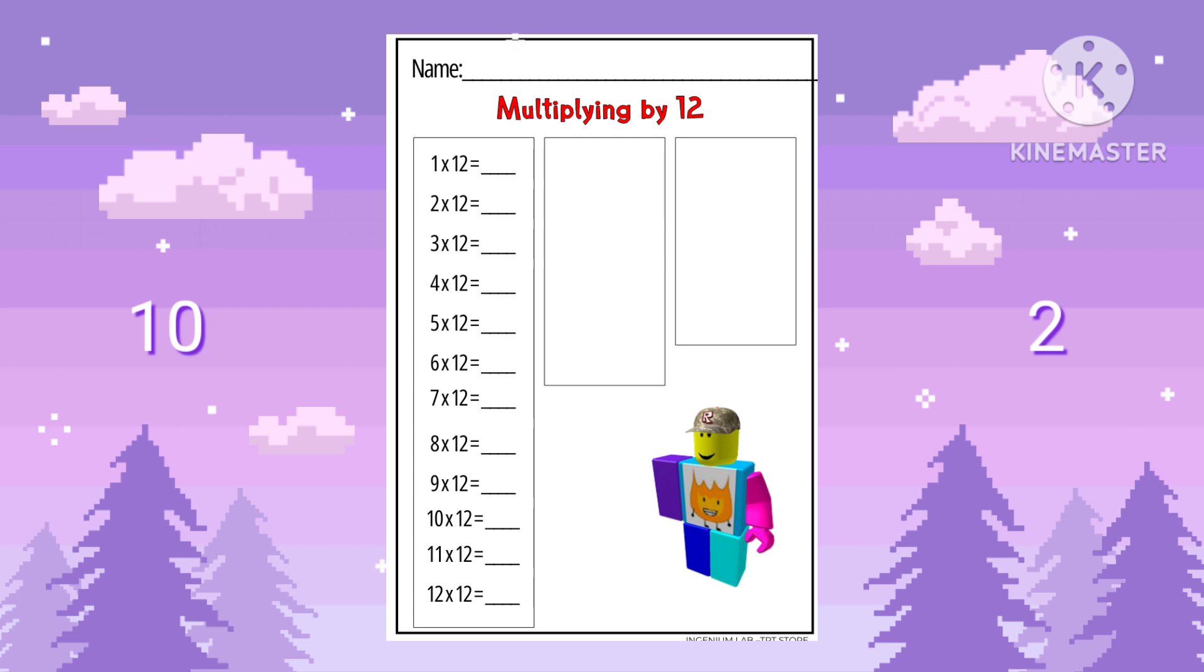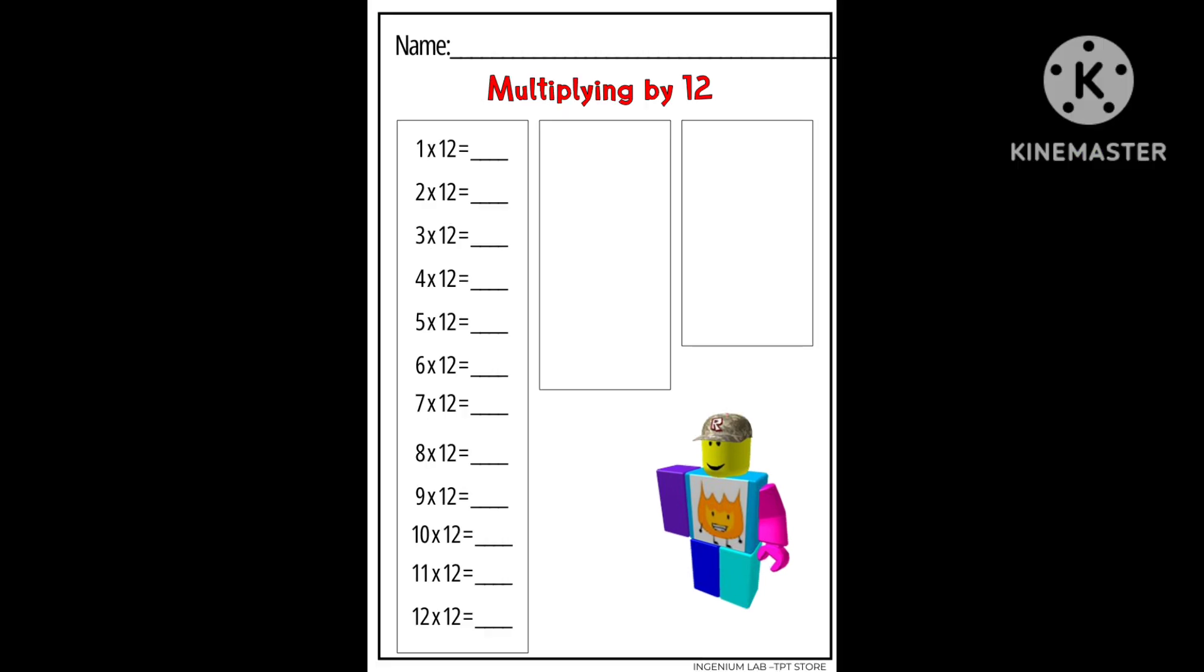I'm also going to show you a quick hack for the 12 facts. We're going to write out the numbers 1 through 12. We're gonna skip 5 and 11 just like this. Just remember to skip the 5 and the 11.